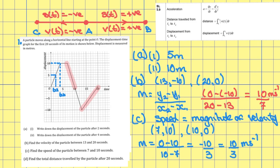Part d: find the total distance traveled by the particle. We need to find the displacement for each section of the journey. In the first section we have traveled 10 meters, in the second section 20 meters, and in the third section 10 meters. So total distance traveled equals 10 plus 20 plus 10, which equals 40 meters.